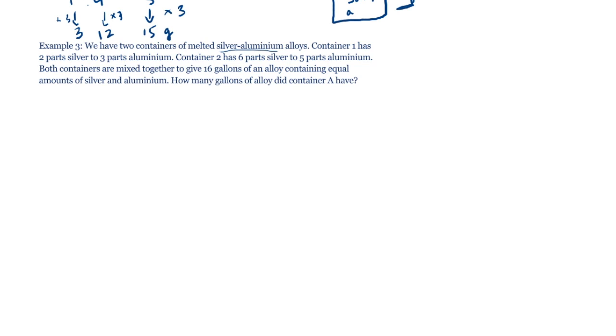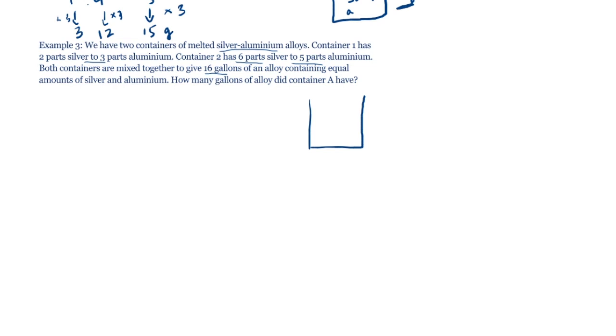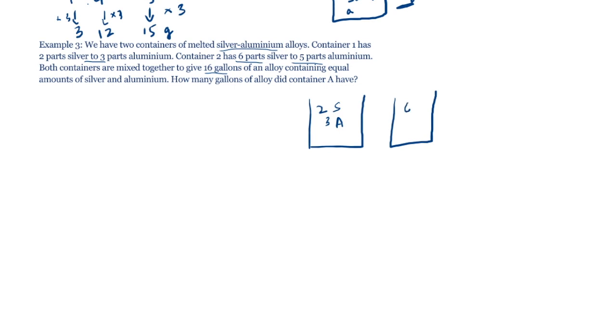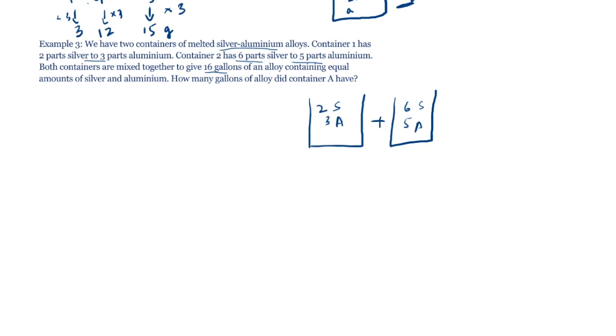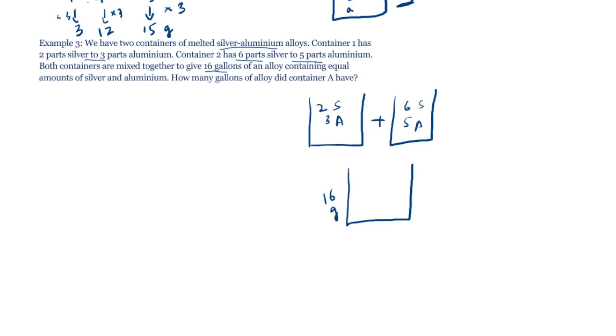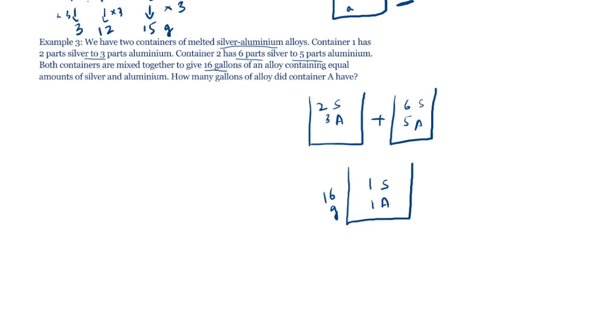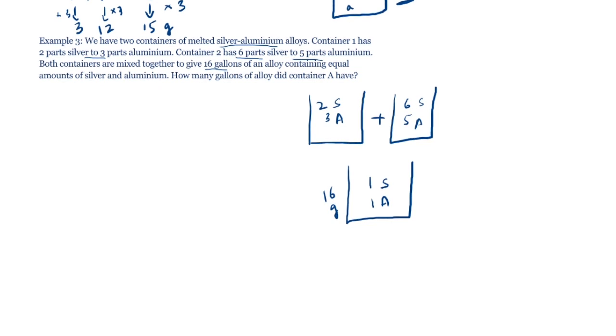We have two containers of melted silver aluminium alloys. Container 1 has 2 parts silver to 3 parts aluminium and container 2 has 6 parts silver to 5 parts aluminium. Both of them are mixed together to give 16 gallons. So let's draw that small diagram that we have been making. So container 1 has 2 parts silver to 3 parts aluminium and container 2 has 6 parts silver to 5 parts aluminium. We don't know how many gallons they have. They are both mixed together to give 16 gallons of an alloy, so the total is 16 gallons. Containing equal amounts of silver and aluminium. That means for one part of silver, we have one part of aluminium. They are equal. So 50-50. How many gallons of alloy did container A have? Now people get confused in this question even though it is not different from our previous questions at all.